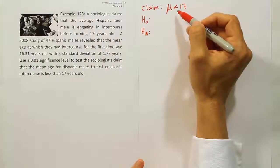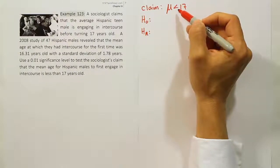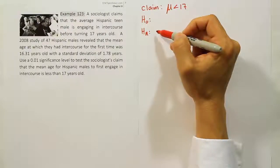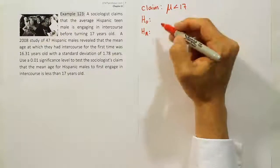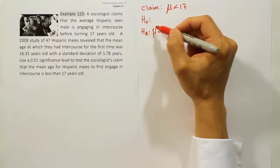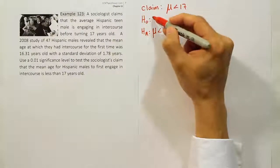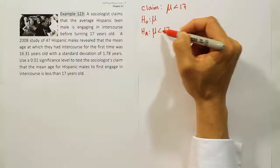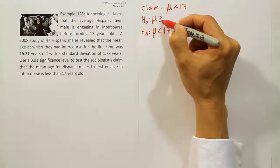Now if you look at the claim, it has a symbol less than. That's a symbol that HA uses as well. So the claim and HA in this problem are the same. Now H0 would have to express the complement idea which would be the opposite of this. So it would be greater than or equal to 17.